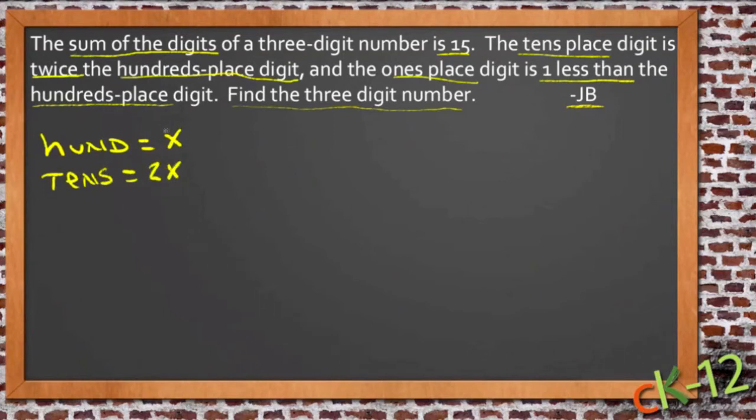Then the ones place digit is one less than the hundreds, so that one's just x minus 1. Then the other information we have is that the sum of the three digits is 15. So all three of these things added together is 15. So that means that we have x plus 2x plus x minus 1 equals 15.